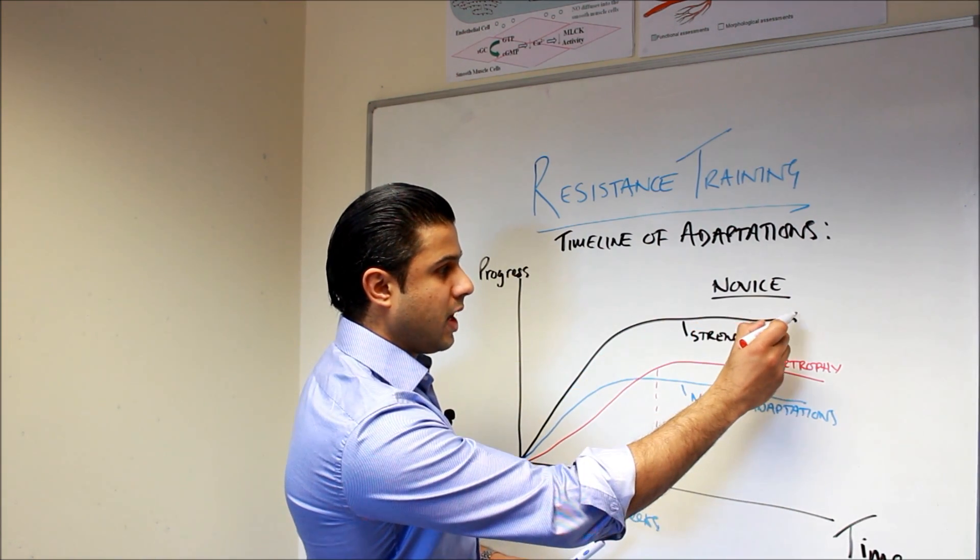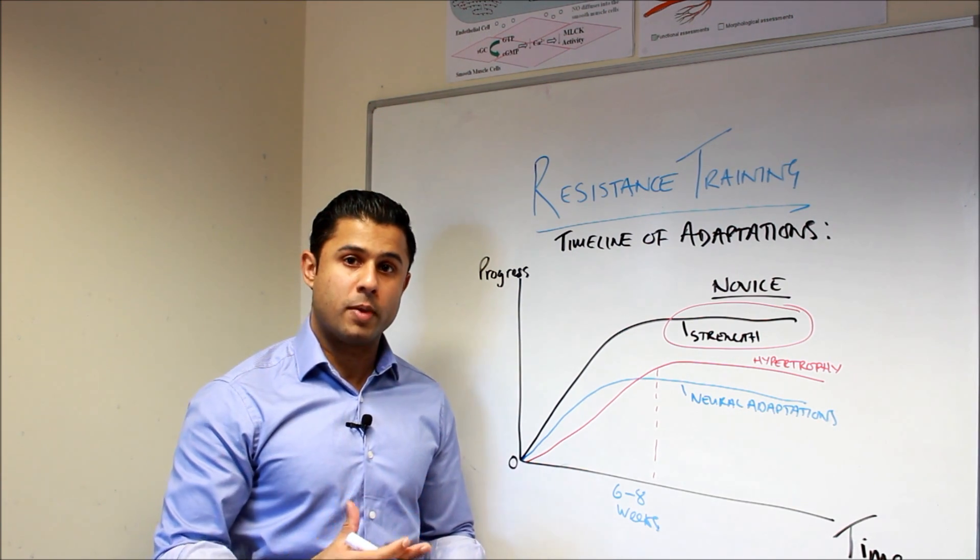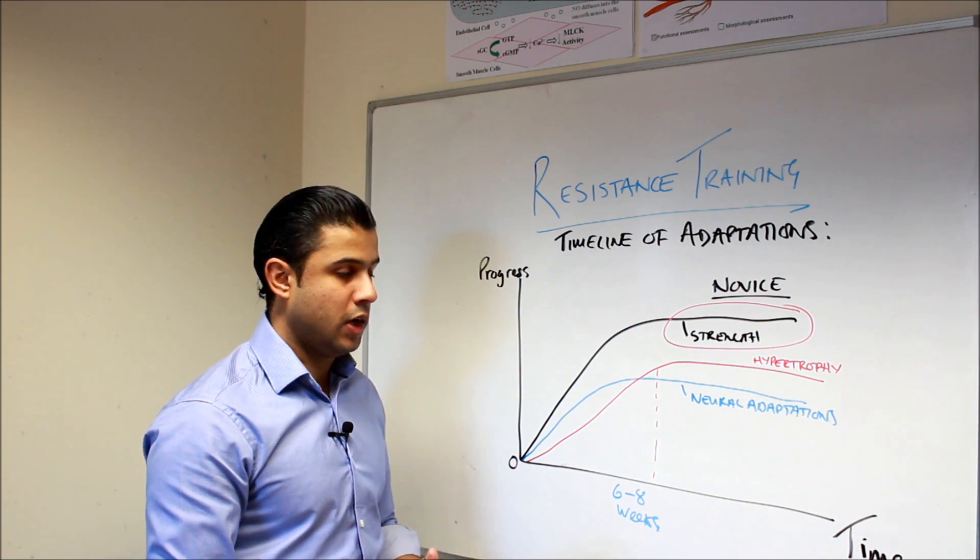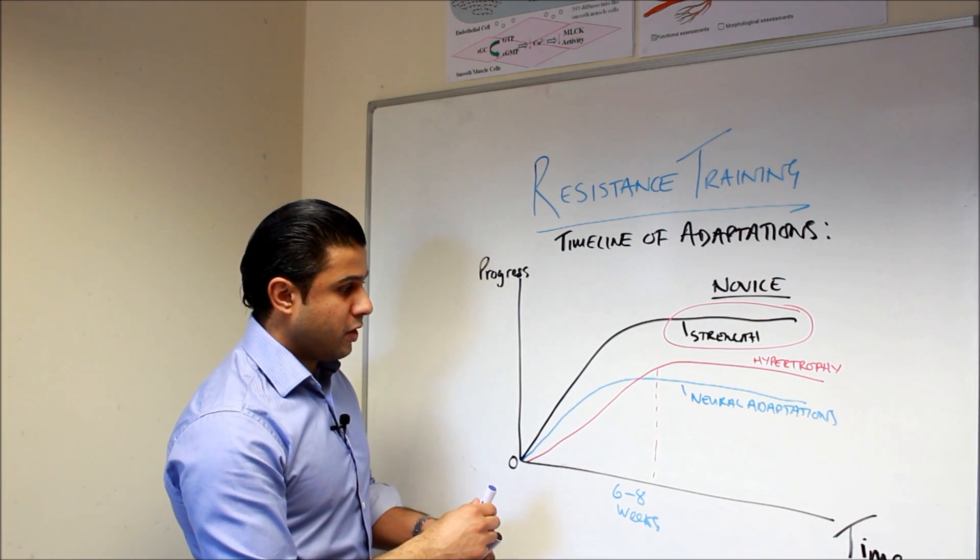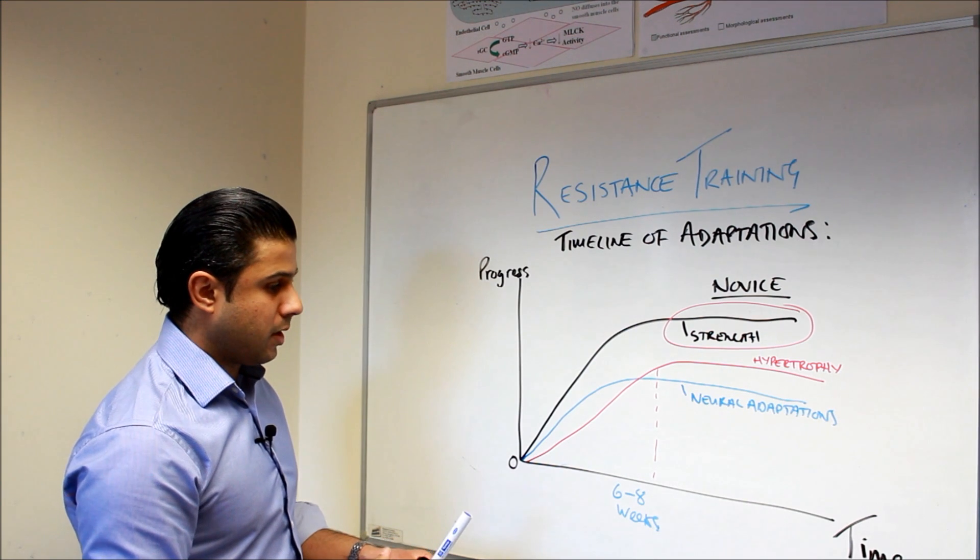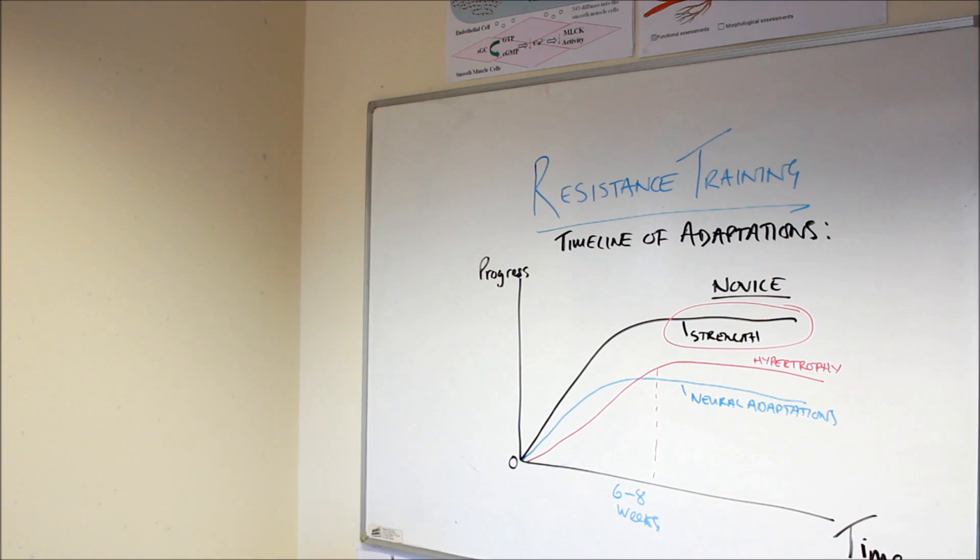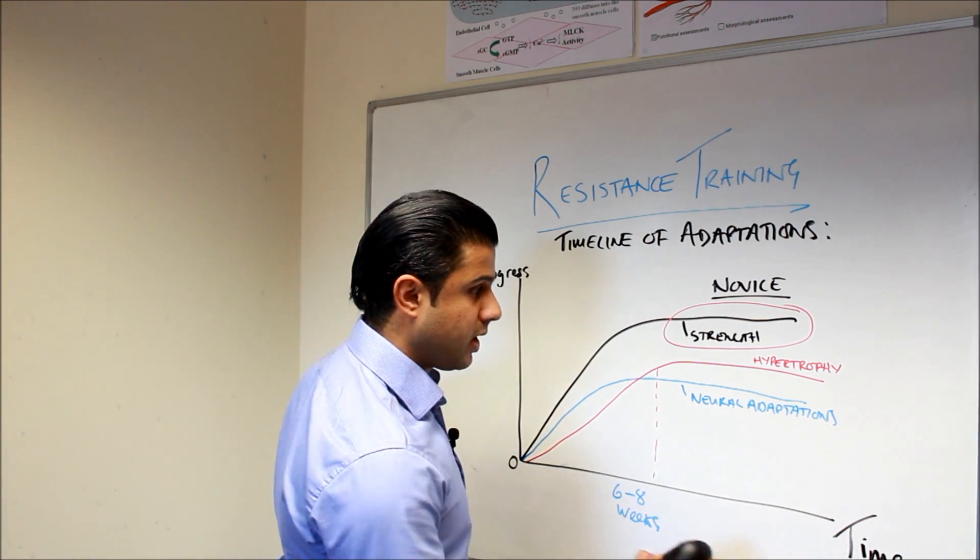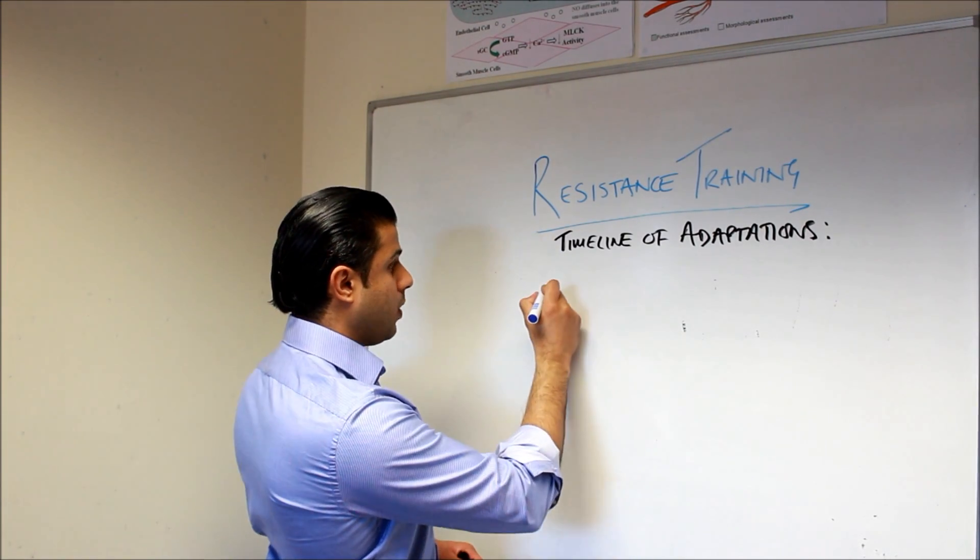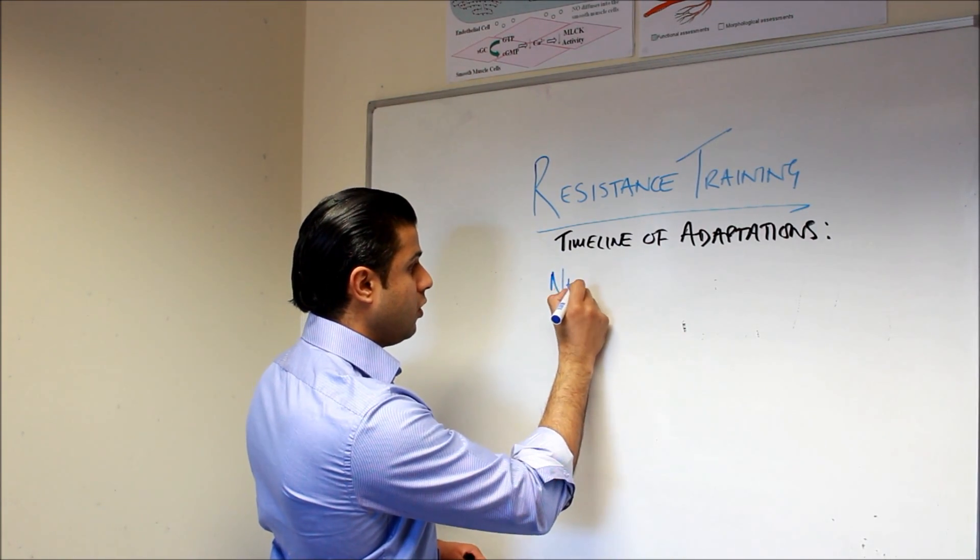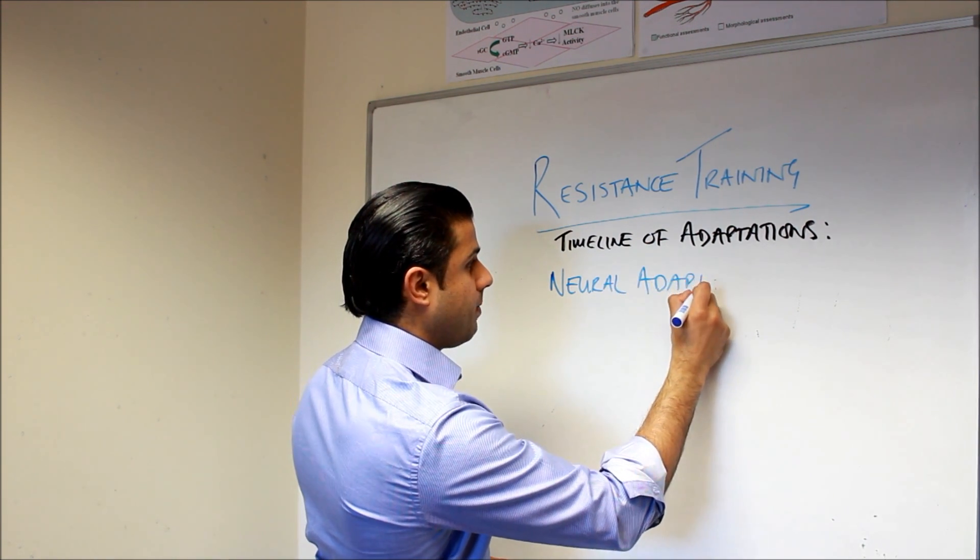Now note, we do have this area here in strength where there is a plateau, and we'll talk more about ways to overcome that plateau in a subsequent video. So let's talk a little bit about the neural adaptations that we're talking about here. So what I will actually do is go through some of the neural adaptations one by one. So we can get rid of this graph here. Let's have a look and see what we mean by neural adaptations.